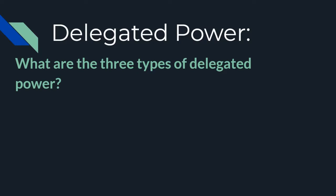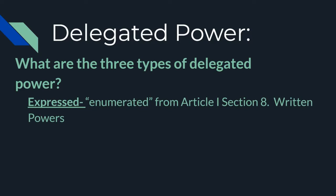Hopefully you were able to recall those from our previous unit — we brought this up in federalism. To review: the first type of delegated power is expressed power, also called enumerated. These are directly written powers from the Constitution given expressly to Congress — Article 1, Section 8. They are directly written in the Constitution and can be applied from the text itself.